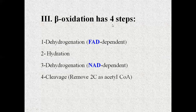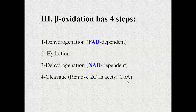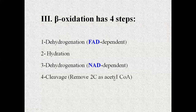The fatty acids will pass through a series of four reactions. At the end, the end product of beta-oxidation is acetyl-CoA. The fatty acid is composed of carbons, and two carbons at a time are released in the form of acetyl-CoA.